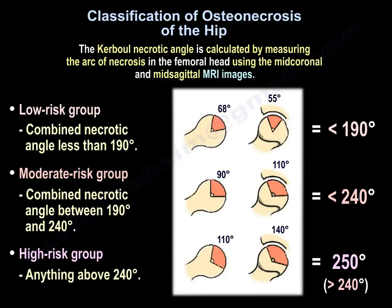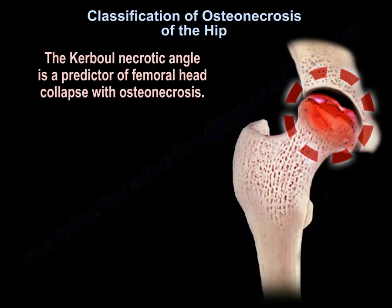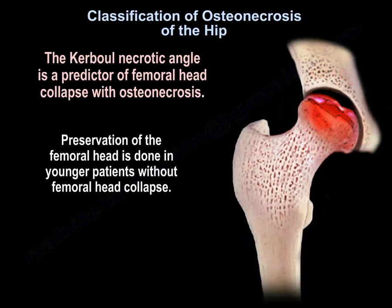The low risk group has a combined necrotic angle of less than 190 degrees. The moderate risk group has a combined necrotic angle between 190 and 240 degrees. The high risk group has angles above 240 degrees. The carbone angle is a predictor of femoral head collapse with osteonecrosis.